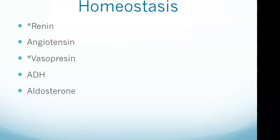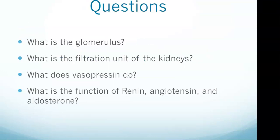ADH is responsible for urine concentration because it is the only one directly acting on the collecting duct. Aldosterone increases the reabsorption of sodium from the renal tubules, causing more water to be reabsorbed via osmosis. The trigger for aldosterone is both decreased blood pressure and increased potassium levels. To answer the vasopressin question: vasopressin prevents fluid loss to maintain blood volume.